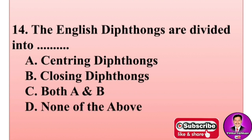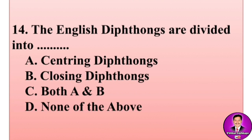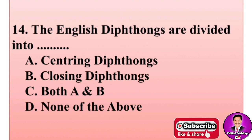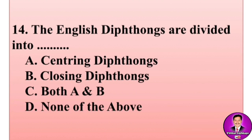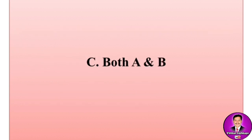Next MCQ: English diphthongs are divided into — options are: A, centering diphthongs; B, closing diphthongs; C, both A and B; D, none of the above. The correct answer is C — both centering diphthongs and closing diphthongs.